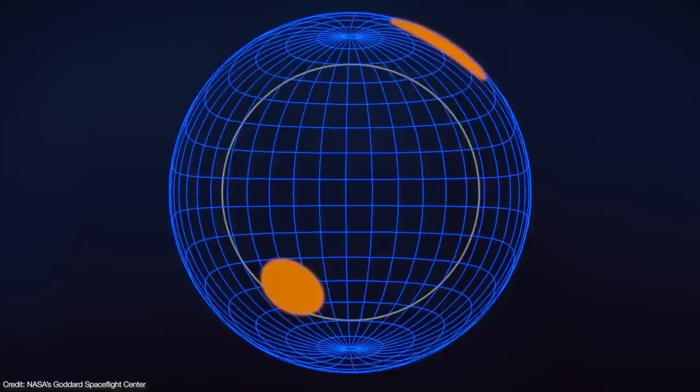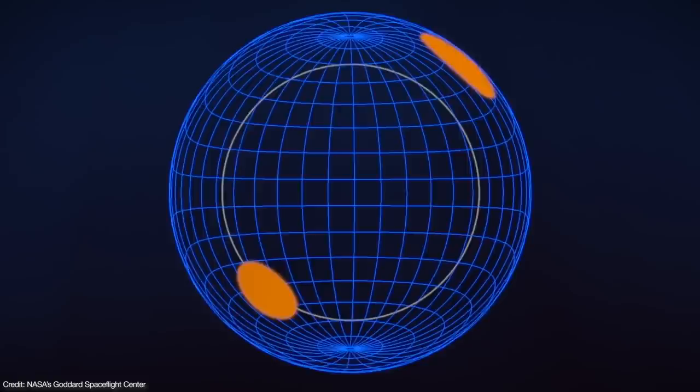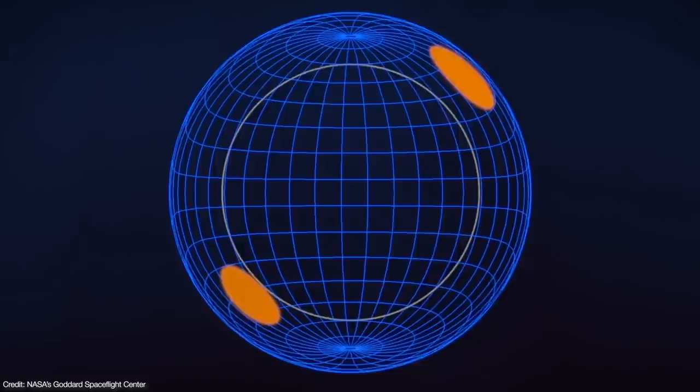This means the hotspots may never quite disappear from view, but the light from the far side would be slightly delayed as it had to travel a longer distance toward us. This creates a subtle difference in the timing of the arriving x-rays.